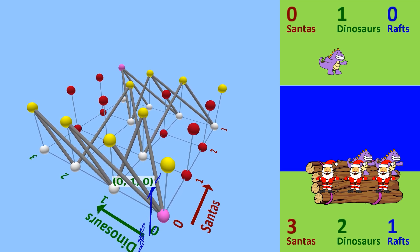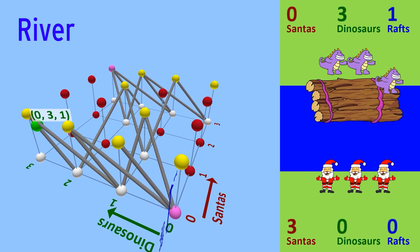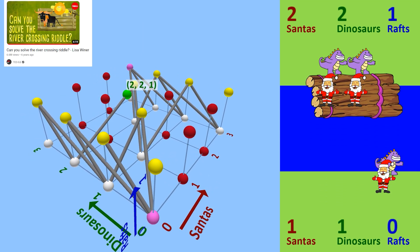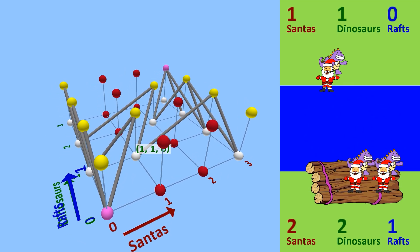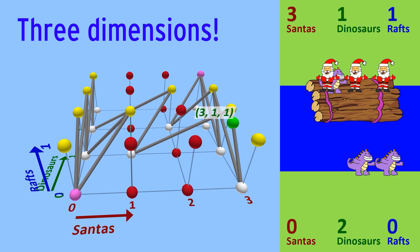But you might be wondering, what in the world are we looking at right now? Well, it's a visualization on how to solve the world-famous River Crossing puzzle. TED-Ed already made a fantastic video explaining and solving this puzzle in 2016, but I want to try a different solving approach that takes advantage of the fact that the human brain likes seeing things in three dimensions.